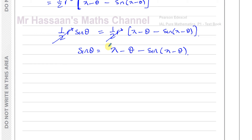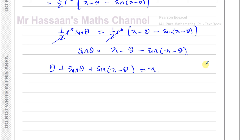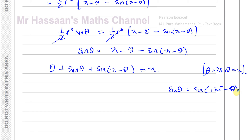Rearranging — adding theta and sine of pi minus theta to both sides — gives: theta plus sine theta plus sine of pi minus theta equals pi. Many students will get stuck here. What we need to understand is something from Chapter 6: the sine of an angle is the same as the sine of 180 degrees minus that same angle. In radians, sine theta equals sine of pi minus theta.